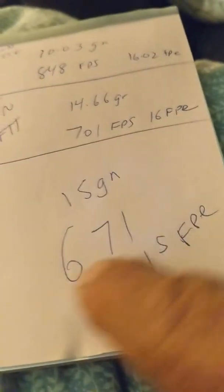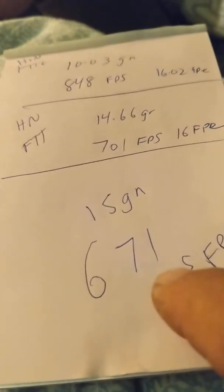Remember that if pellets travel at 671 feet per second, whatever grain the pellet is, is how many foot-pounds of energy it is. So that's the magic number for that.